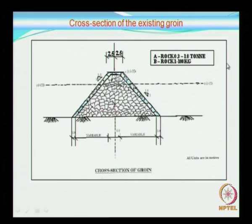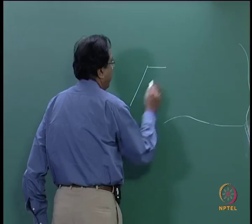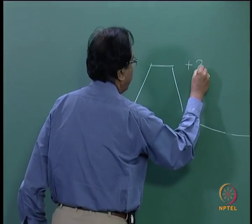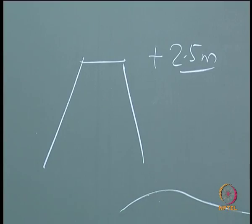Looking at the cross-section that was adopted: the armour layer was 1 tonne, and inside the core layer it was around 100 kg. For such a groin the top level is also very important — here the top level was adopted as plus 2.5 meters.